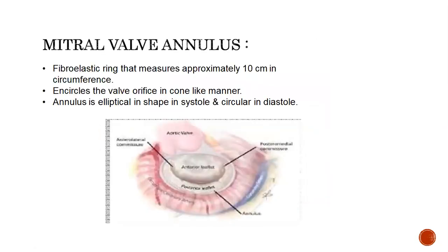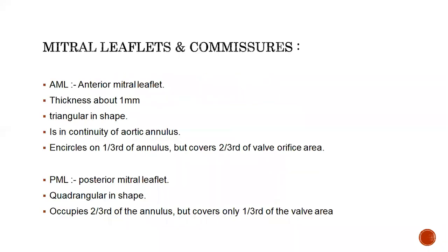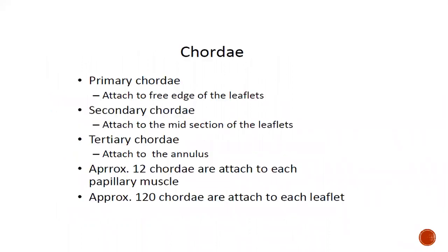The mitral valve annulus is a fibroelastic ring measuring around 10 centimeters in circumference. It encircles the valve in a cone-like manner and is elliptical in shape. Changes in the mitral valve annulus are one cause of mitral regurgitation. There are two mitral valve leaflets: the anterior mitral leaflet, which is triangular in shape, has continuity with the aortic annulus, encircles one-third of the annulus, and covers two-thirds of the valve area. The posterior mitral leaflet is quadrangular, occupies two-thirds of the annulus, and covers one-third of the valve area.